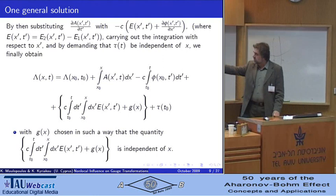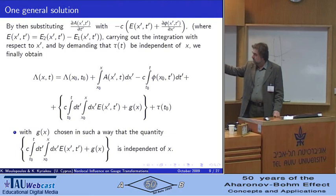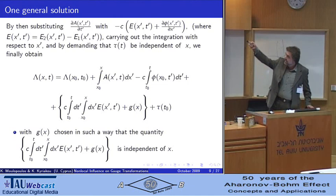These new terms can be non-zero when we have non-zero electric fields in regions of space-time that are remote distance to the observation point x t where we evaluate lambda.